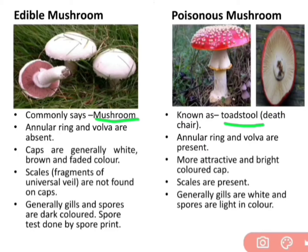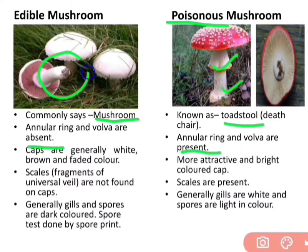Annular ring and volva are present in poisonous mushrooms and these are absent in edible mushrooms. Poisonous mushroom mein annular ring and volva present hote hain jabki yeh edible mushroom mein absent hote hain.